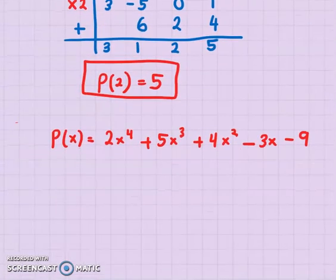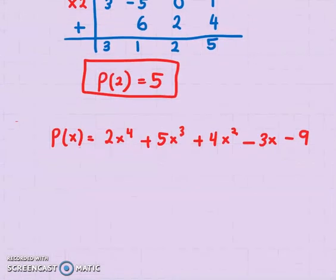So we have P(x) = 2x⁴ + 5x³ + 4x² - 3x - 9. The question wants you to evaluate P(-2).